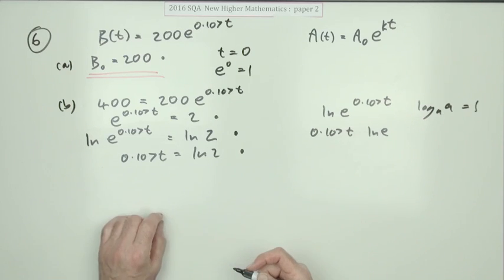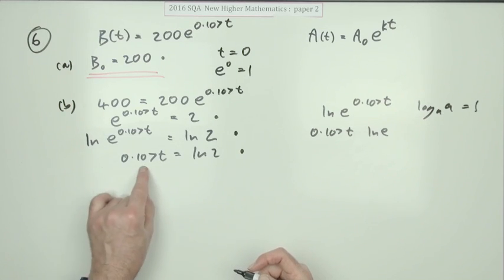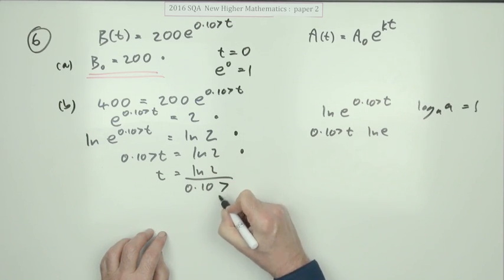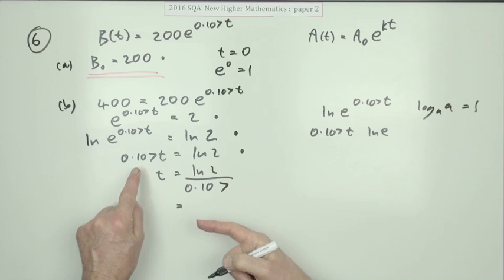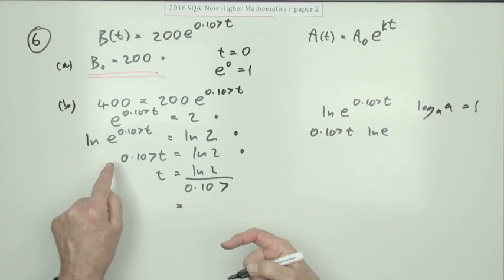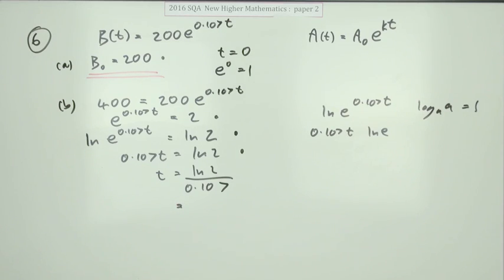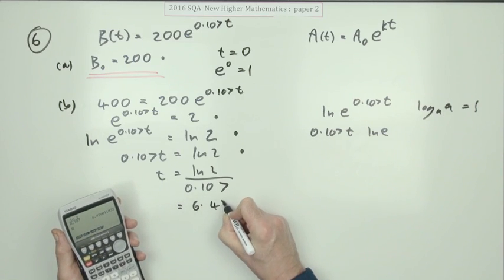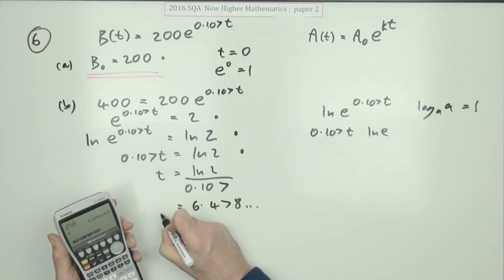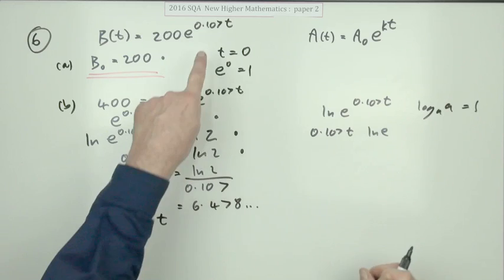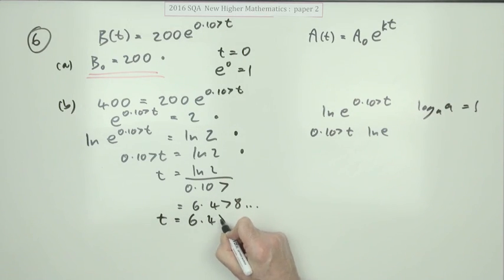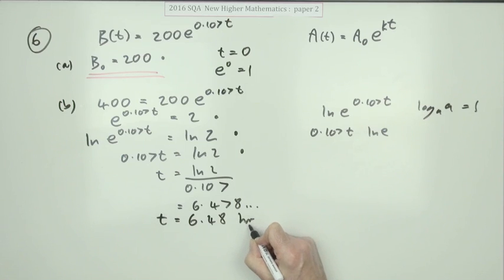Next it's simply a case of isolating T: divide both sides by 0.107, giving T equals Ln 2 divided by 0.107. Putting that into a calculator gives 6.478..., and rounding to three significant figures — matching the precision given in the equation — gives T equals 6.48 hours. That's the final mark.